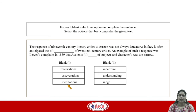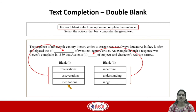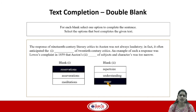Now let's look at the double blank question. In a double blank question you have two blanks and you have to select one answer choice per blank. You will see three answer choices for blank one and three answer choices for blank two. Again, an important thing to keep in mind: there are no marks for partially correct answers.